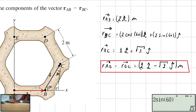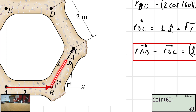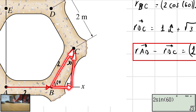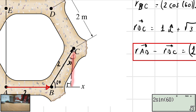Now, we are going to look for the vector RBC. The vector RBC is this one. This vector can be divided into two components — this one and this one. As you can see, both of them are pointing towards the same direction of the axis, which means that they are going to be positive. This component is going to be positive, and this component is going to be positive.